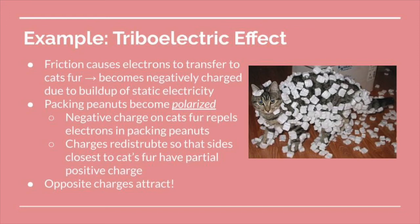Now let's look at another example in more detail, because it also helps us understand polarization. This is one of my favorite examples of the triboelectric effect — a cat walking around the house, rubbing up against door frames, people's pant legs, rolling on the floor. All this friction causes electrons to transfer to the cat's fur, so the cat's fur becomes negatively charged due to a buildup of static electricity. When the cat gets into a box of packing peanuts, each packing peanut becomes polarized.